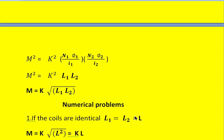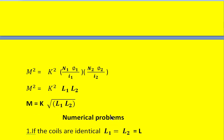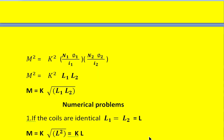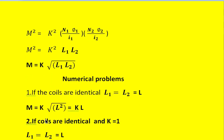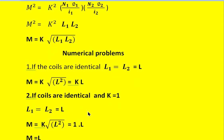Now let us look at numerical problems using this formula. If the coils are identical, then L1 equals L2 equals L, and the mutual inductance becomes M equals k times the square root of L1 L2. Since L1 L2 equals L squared, the square root gives L, so M equals k times L.